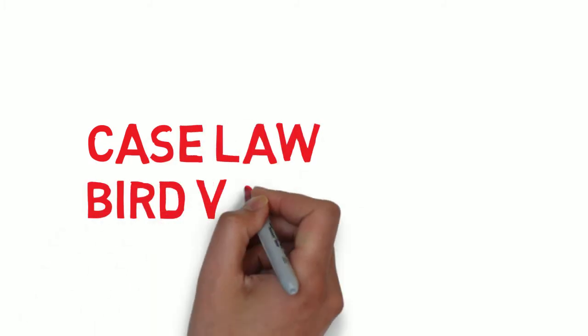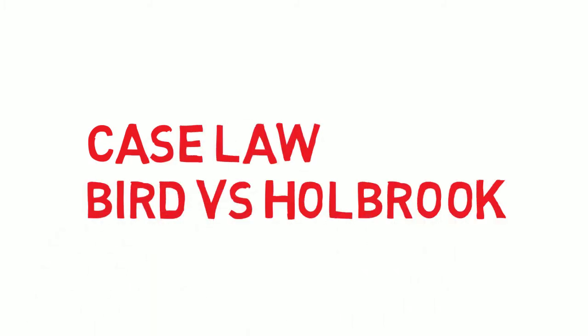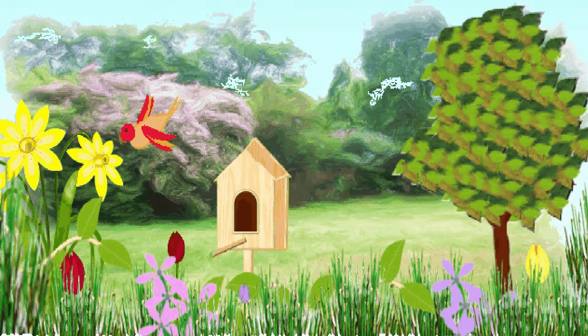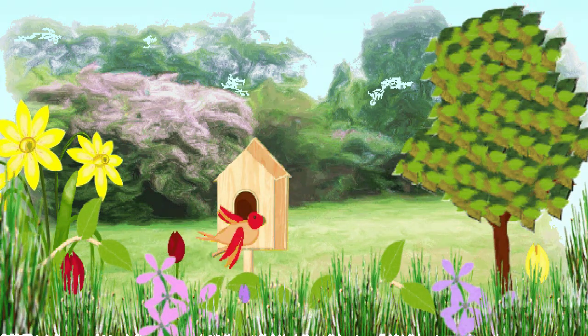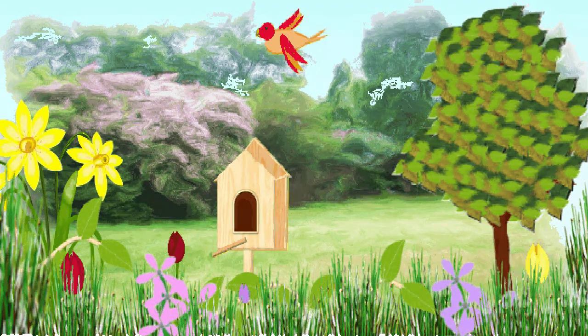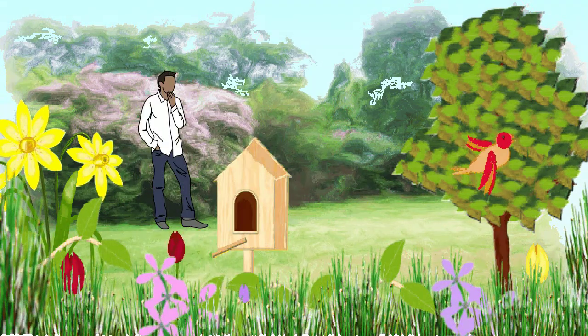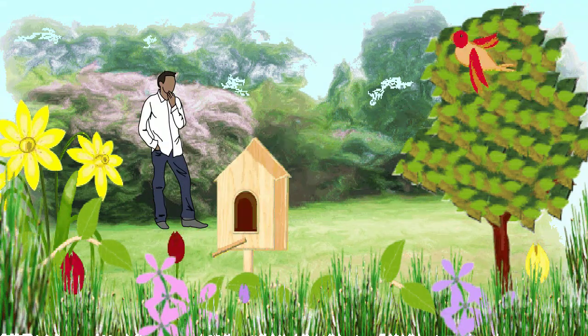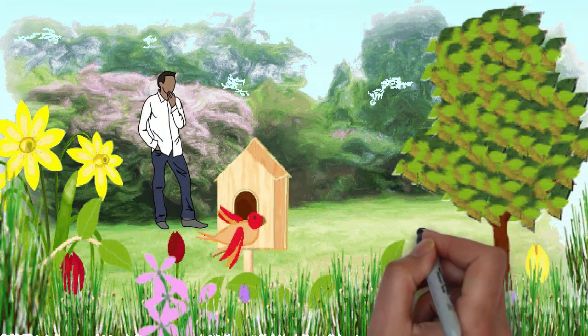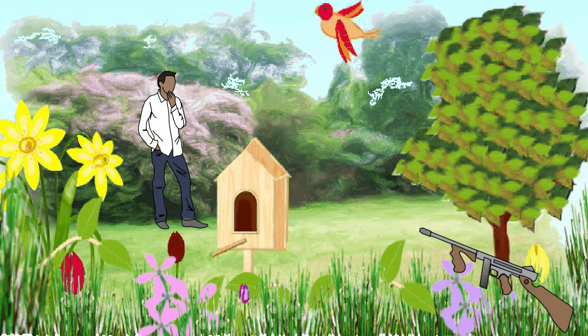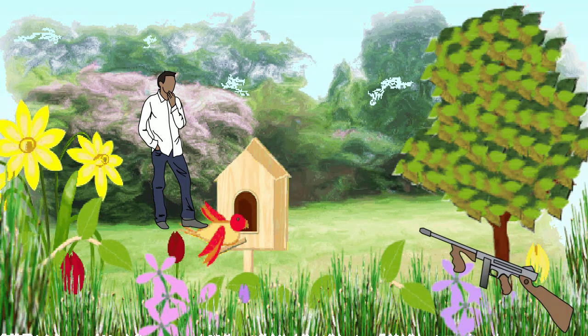Let's see the famous case law as an exception — that is Bird versus Holbrook. In this case, a trespasser entered a garden to recover a stray bird, but he was unaware of the fact that there was a spring gun planted in the garden, and due to which the man got injured by the shot of the spring gun.